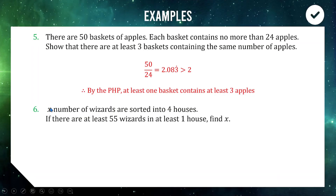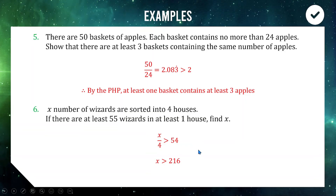Question six: x wizards are divided amongst 4 houses and at least one house has at least 55 wizards. We need x divided by 4 to be greater than 54, so multiplying across gives x is greater than 216. The smallest possible value is therefore 217 — with 217 wizards divided amongst 4 houses you're always going to have at least 55 wizards in at least one house.